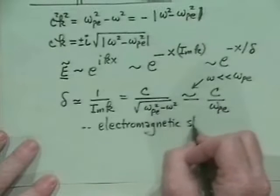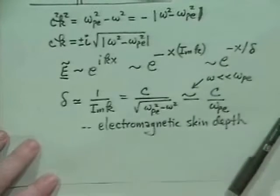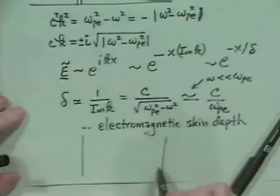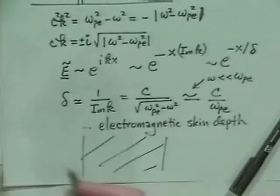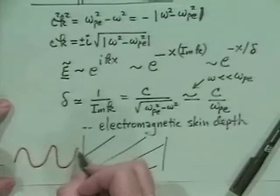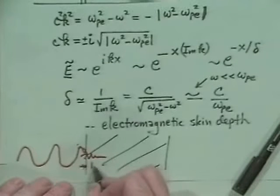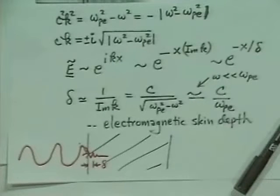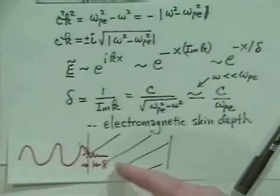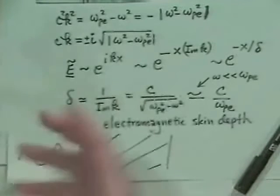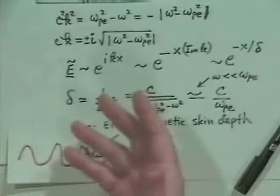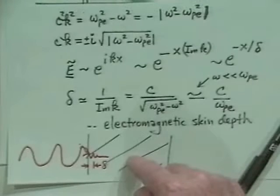This is what is often referred to as the electromagnetic skin depth. Suppose I have a slab of plasma and an electromagnetic wave propagates up to it — it only penetrates a distance δ, an e-folding distance, and just dies off. What's happening is that the electrons are all moving so as to shield out this wave and prevent it from propagating. But if the frequency were higher than the electron plasma frequency, waves would propagate in the plasma with a slightly different index of refraction.